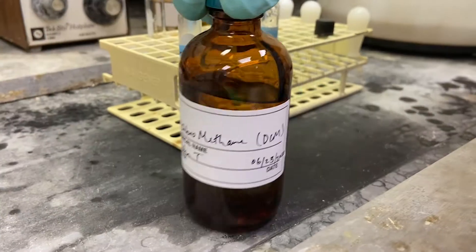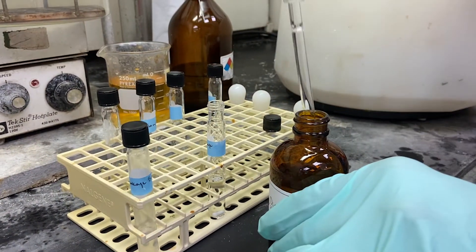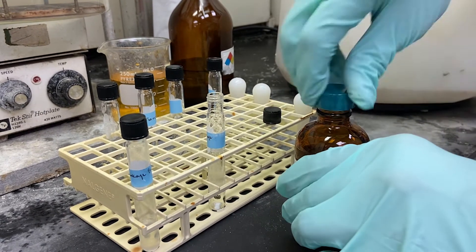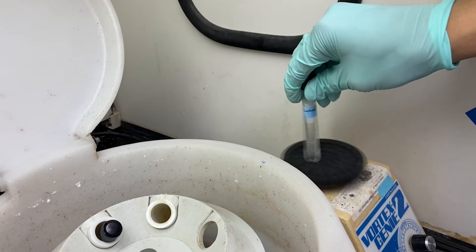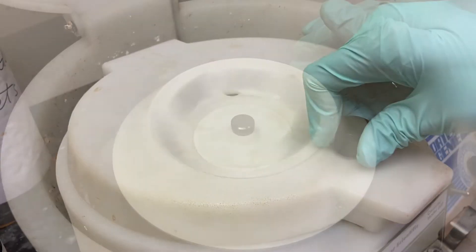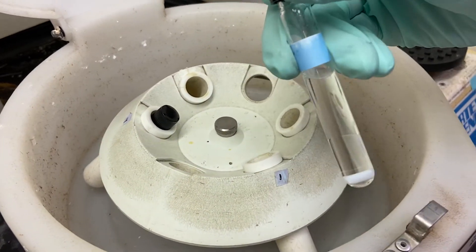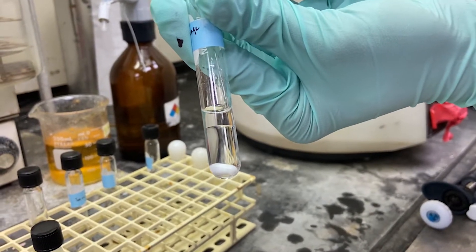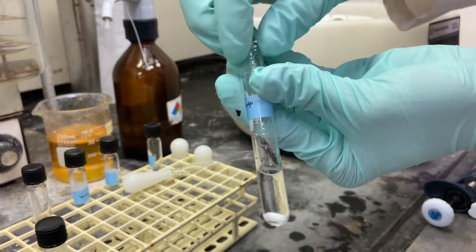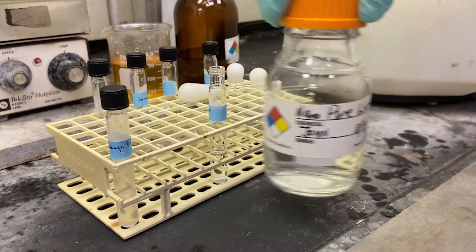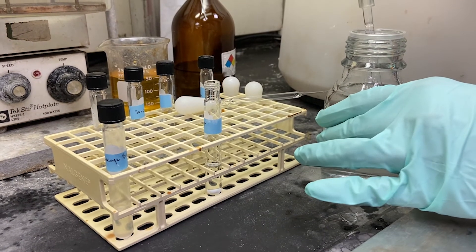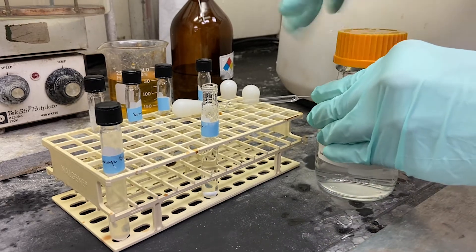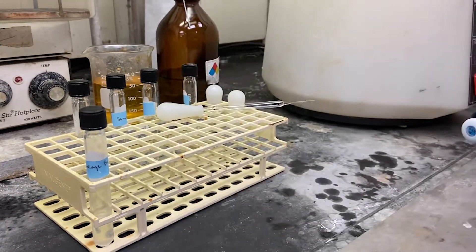Next, two milliliters of dichloromethane or DCM is added to the solution and the sample is vortexed and centrifuged. Centrifugation should be between 30 seconds to one minute. The top water layer is removed washing the sample. This wash is repeated with two more milliliters of water added to the sample and once again vortexed and centrifuged removing the water layer. This is in order to remove all the DMSO from the sample.